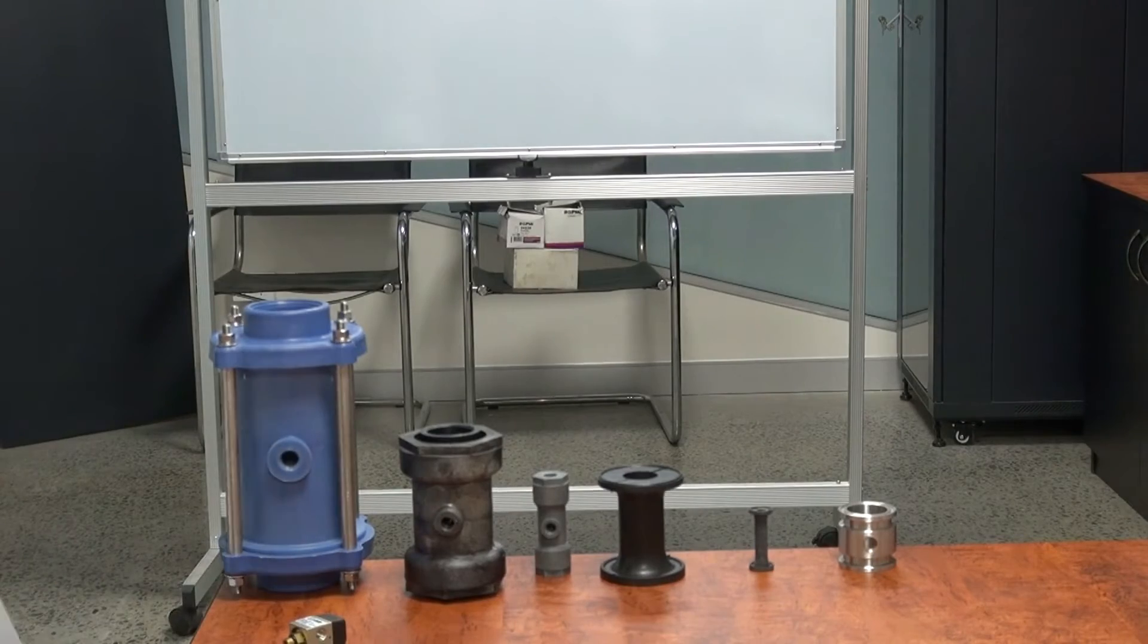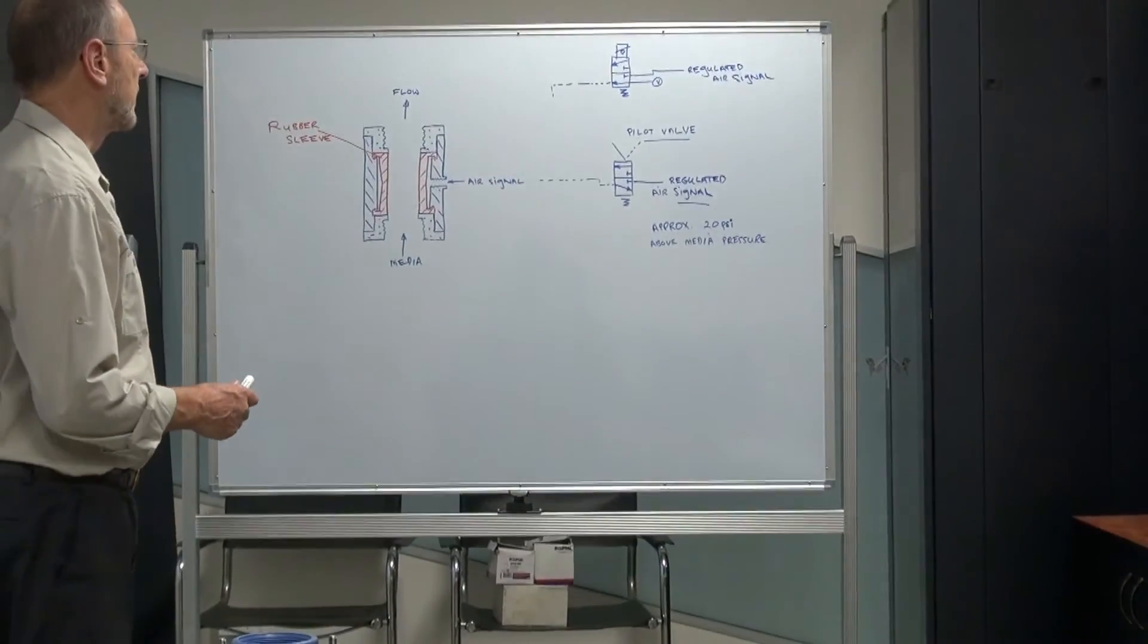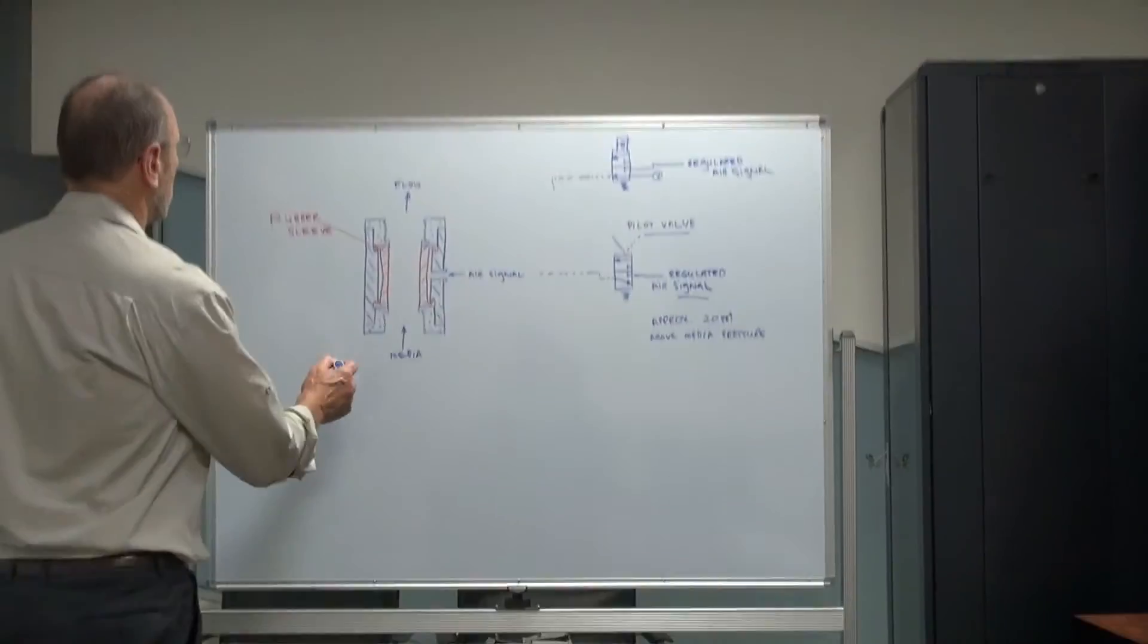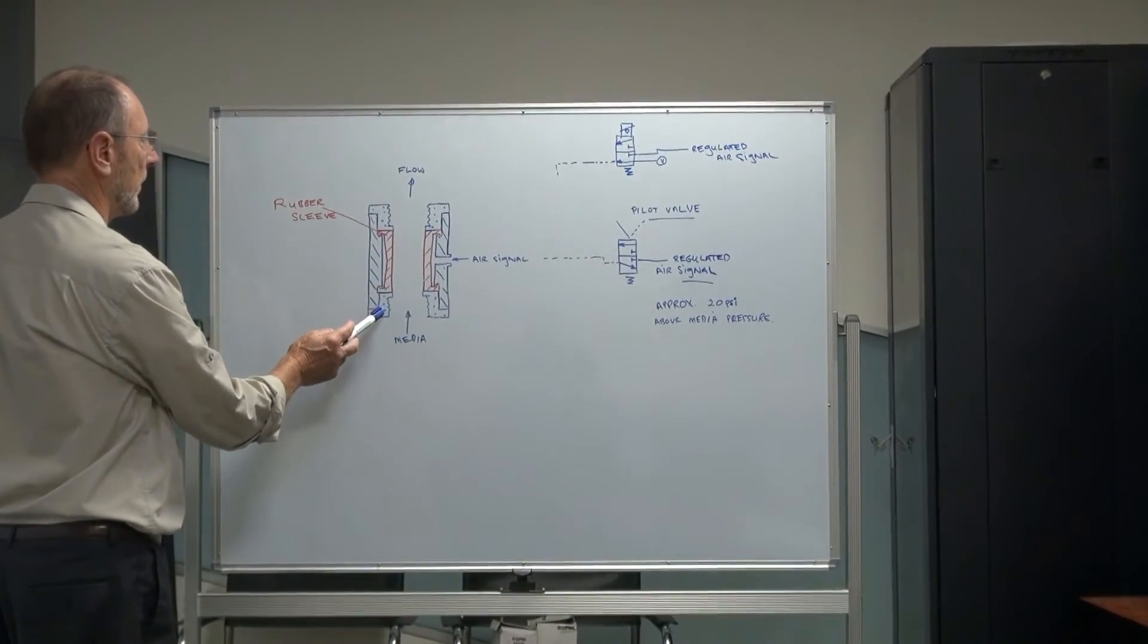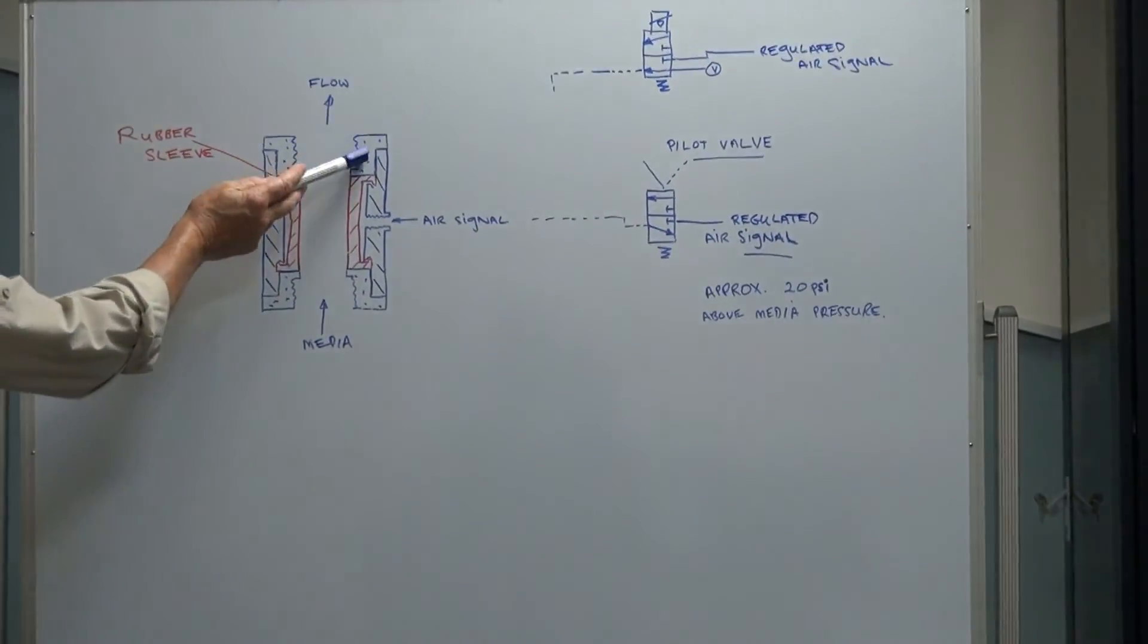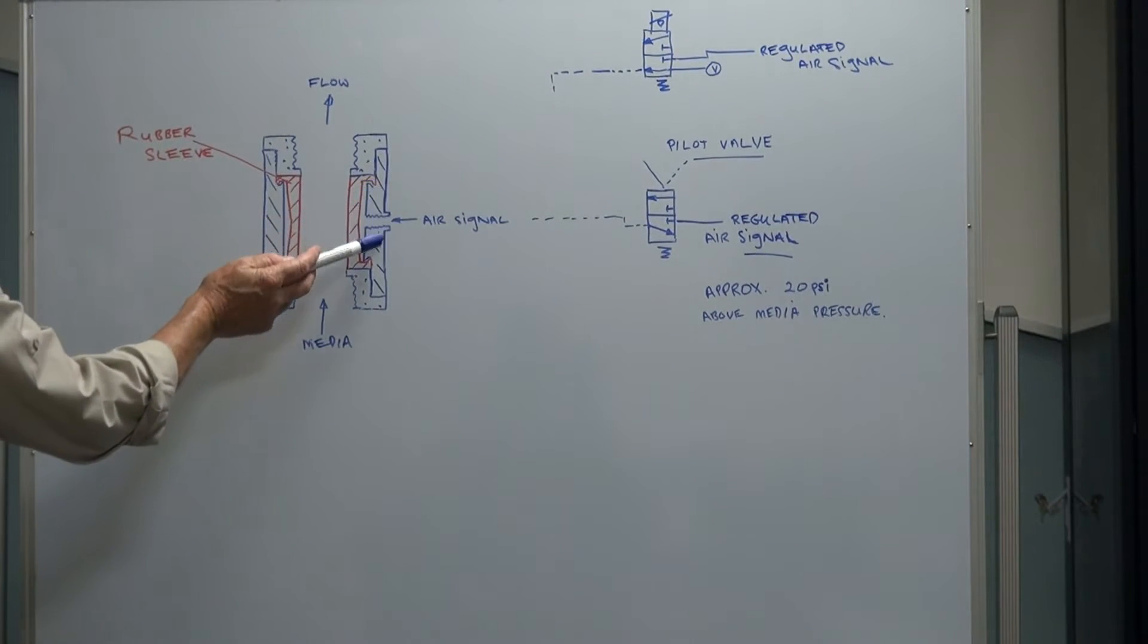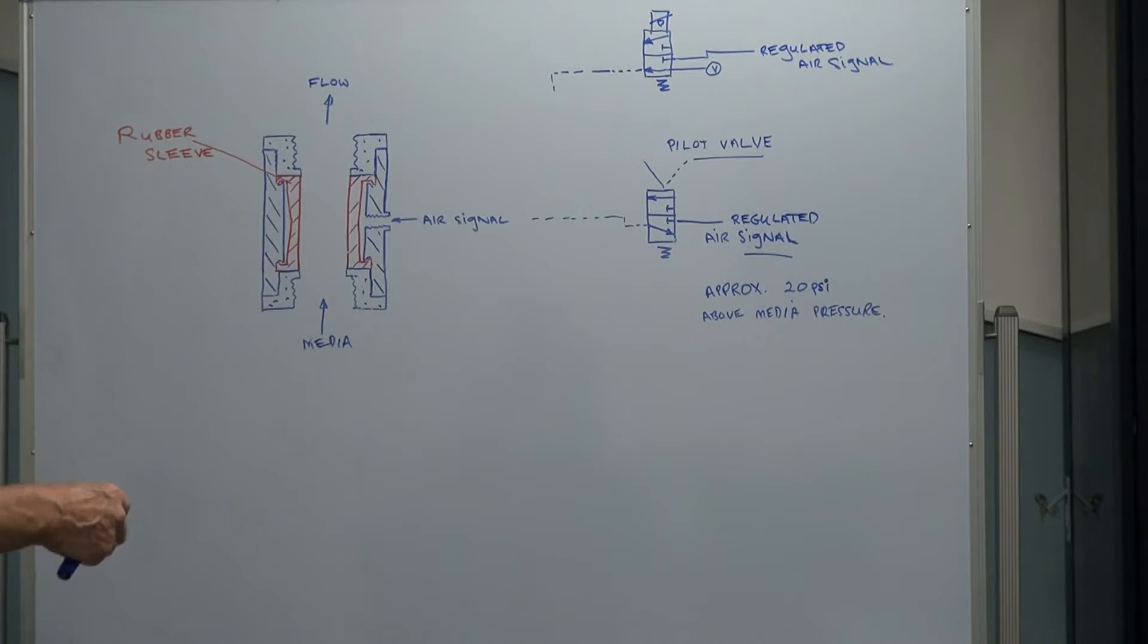So if we have a look at what I've done up here on the board, excuse my rough sketch. We've got a bit of a cross section of the pinch valve. There's threaded ends both ends and the body with the threaded section where the air signal comes through. In red, I've got the rubber sleeve. The flow can go in either direction, doesn't make any difference with a pinch valve.